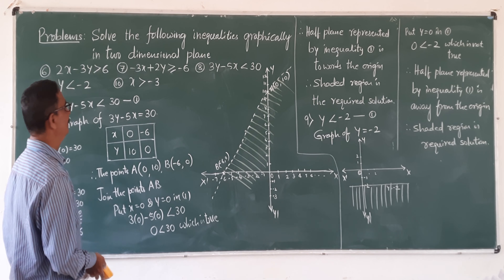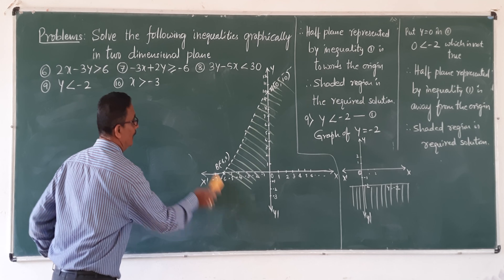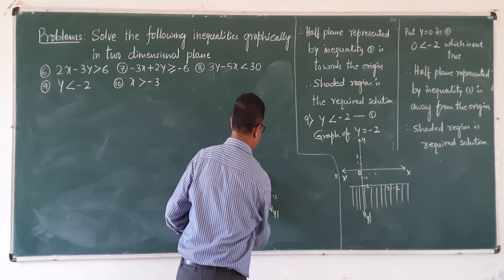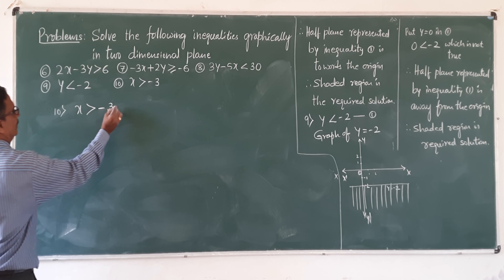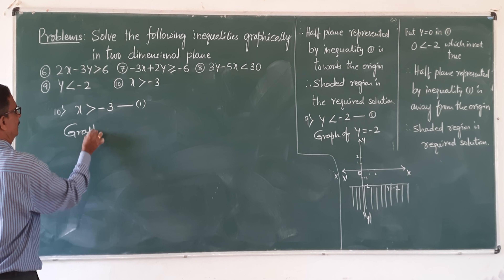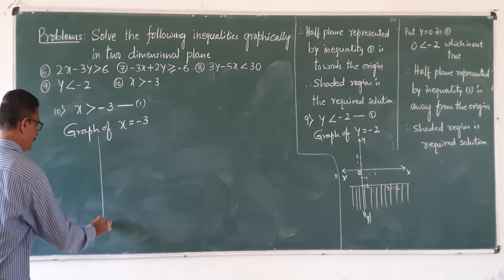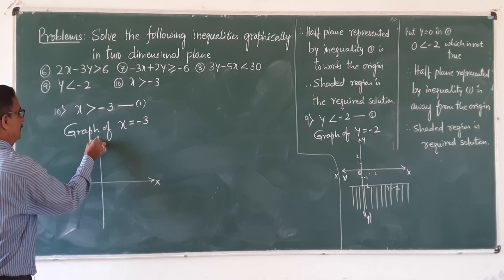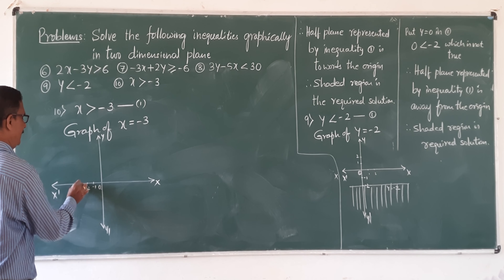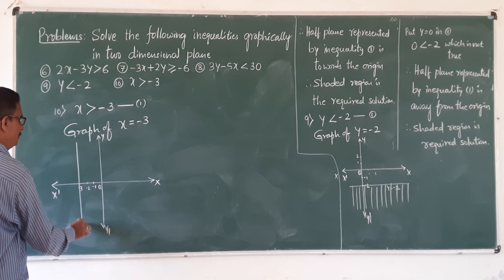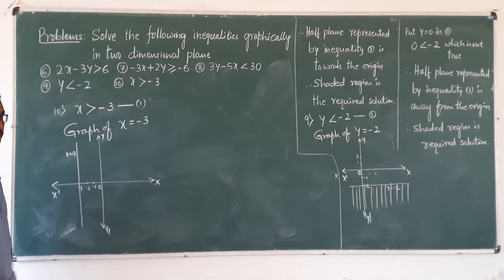Similarly, tenth problem: x greater than minus 3. Convert inequality into an equation — x equals minus 3. There is only one point. Draw the graph with x-axis, y-axis. The values minus 1, minus 2, minus 3 on the x-axis. The line x equals minus 3 is parallel to the y-axis.